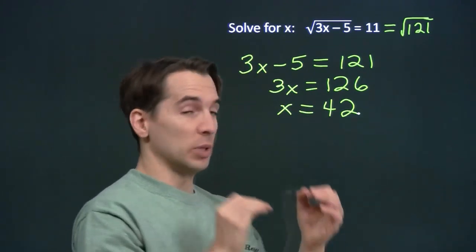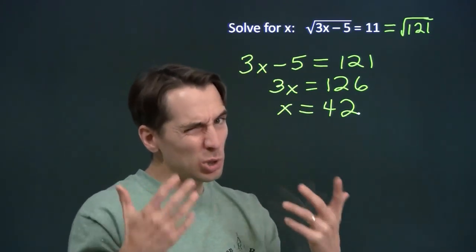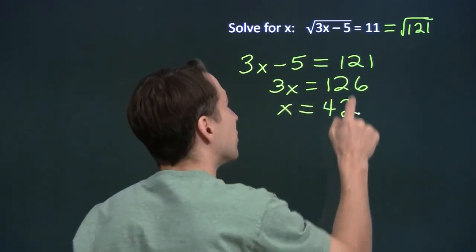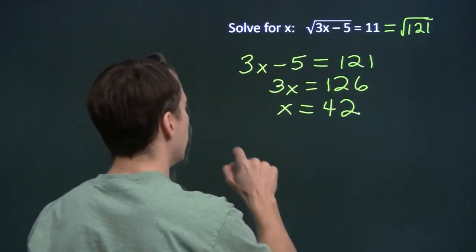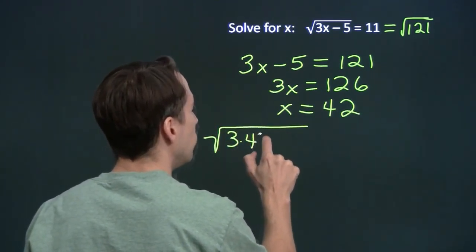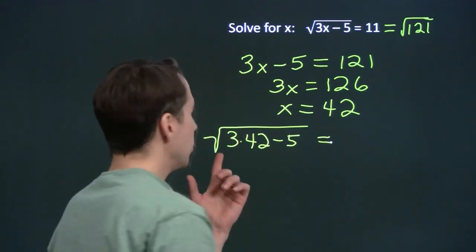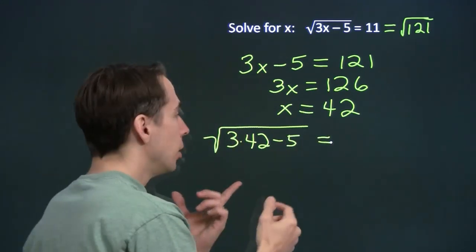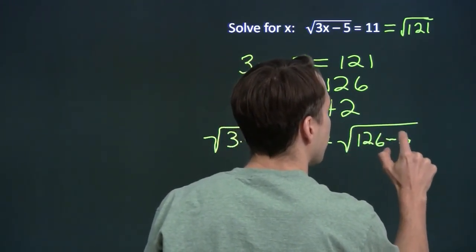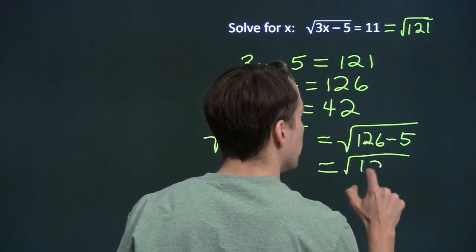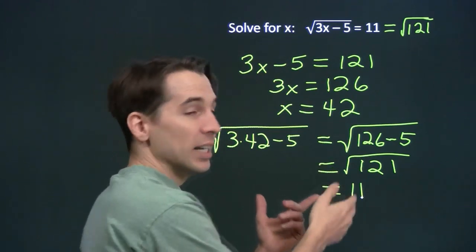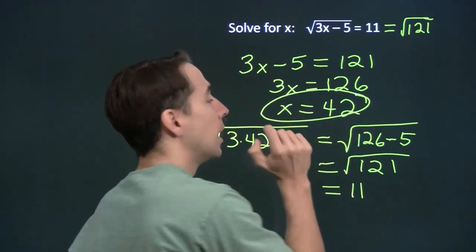We've solved a new type of equation, so we definitely need to check our answer. We take x equals 42 and put it back in: 3 times 42 minus 5. 3 times 42 — 3 times 40 is 120, plus 3 times 2 is 6 — so this is the square root of 126 minus 5. 126 minus 5 is 121, and sure enough the square root of 121 is 11. Our answer checks out, and we're done.